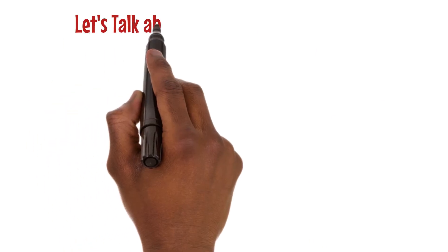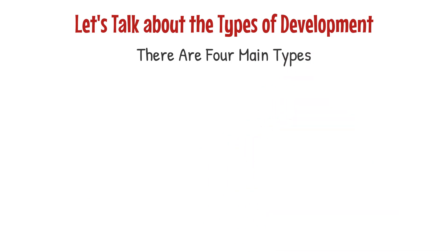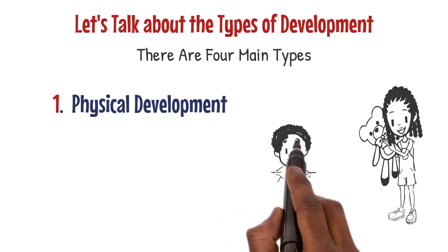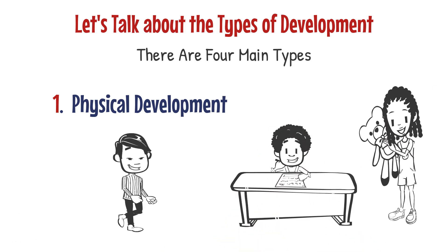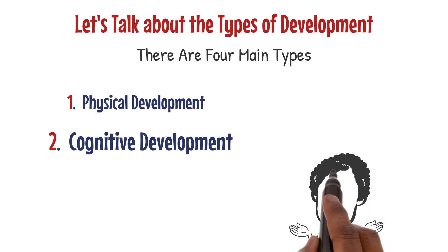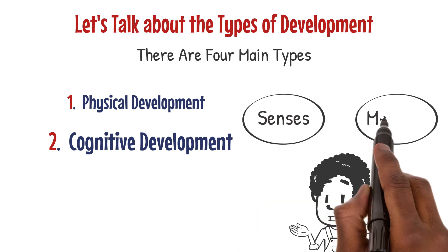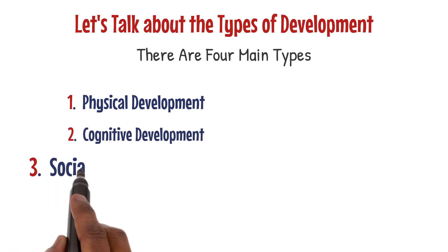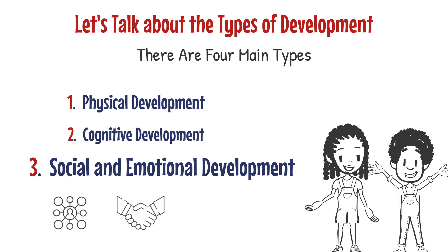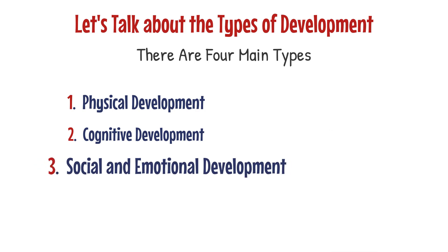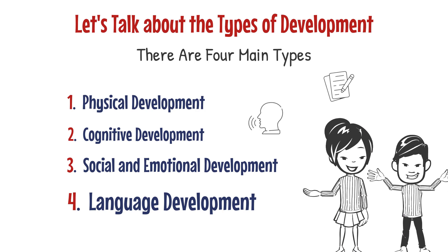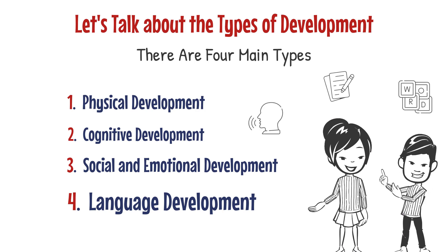Let's talk about the types of development. There are four main types. First is physical development, which includes changes in body size like height and weight, as well as motor skills like walking and writing. Next is cognitive development — how you learn and process information using your senses and memory. Then there is social and emotional development, where you learn to interact with others, share, collaborate, and manage emotions. Finally, language development is vital for communication and includes speaking, writing, and understanding words and symbols.